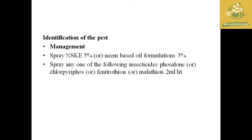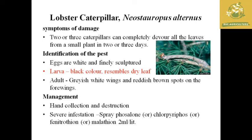Spraying any one of the insecticides like phosphamidon, chlorpyrifos, or malathion at the recommended dose is effective against the looper. The effective dose is 2 ml per liter of water.